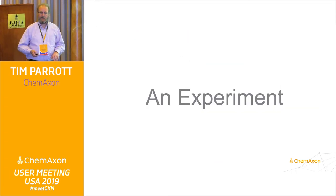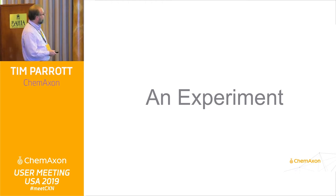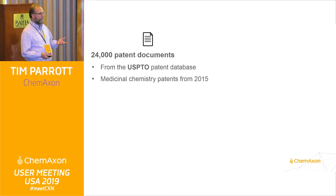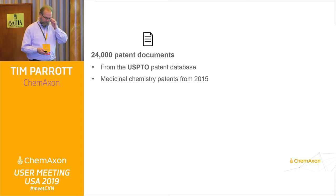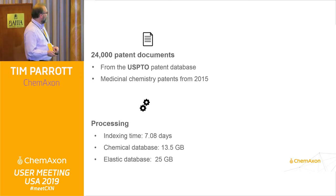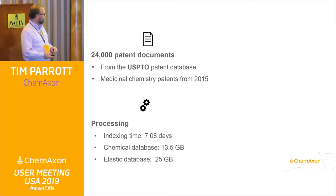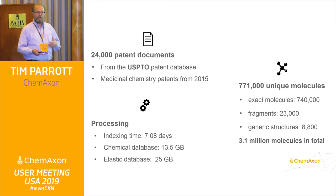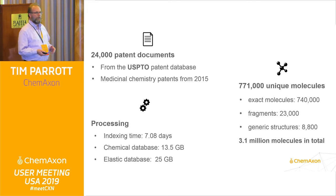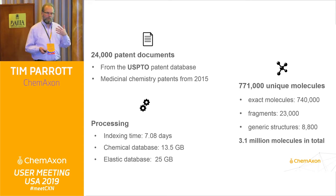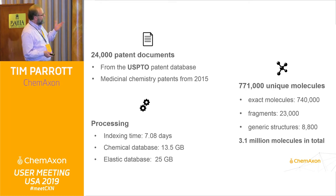The experiment the team undertook involved looking at all patent documents from 2015 through the beginning of this year — about 24,000 medicinal chemistry patents — and processing them using ChemLocator. It took about a week to process and produced a significant amount of data. There were 3.1 million different structures extracted, but once duplicates were filtered out and fragments removed, we ended up with about 740,000 unique structures.